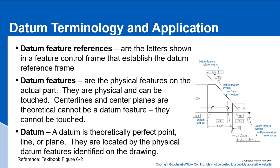Datum terminology and application. Datum feature references are the letters shown in a feature control frame that establish the datum reference frame. Here's a feature control frame — it's a positional tolerance, and here are the applicable datums. A datum feature is on the actual part; those are the physical features on the actual part. They're physical — they can be touched. You can't put datums on center lines or center planes because they are theoretical and not a datum feature, so they cannot be touched.